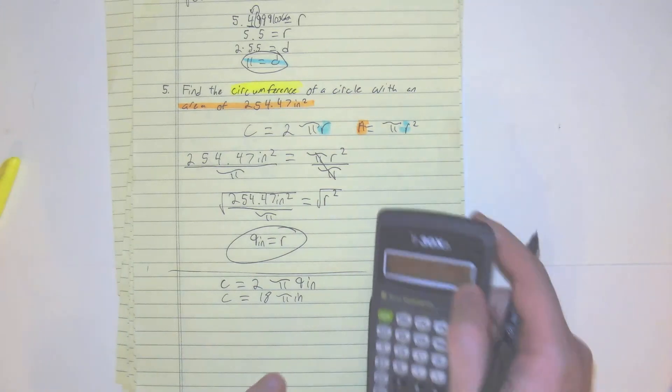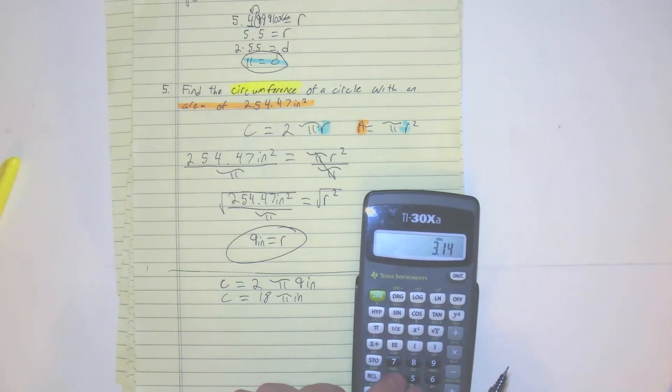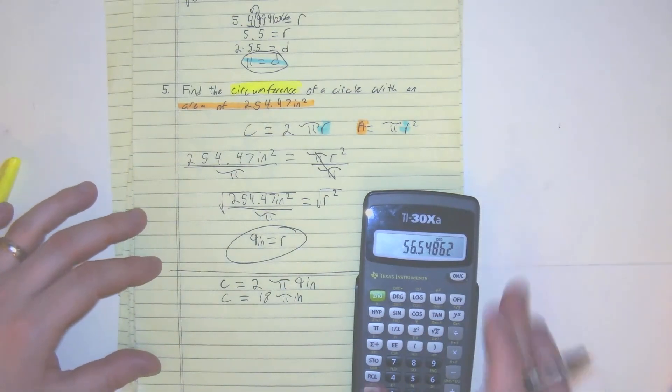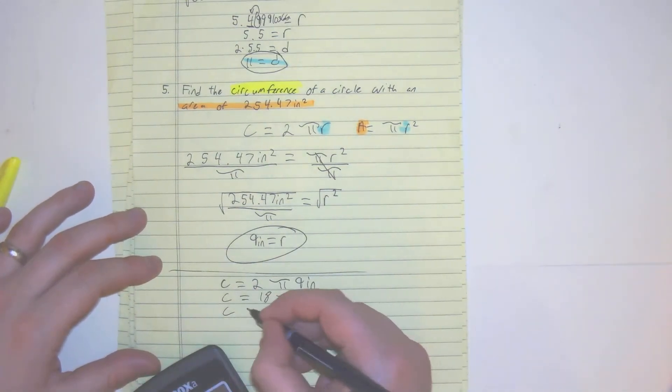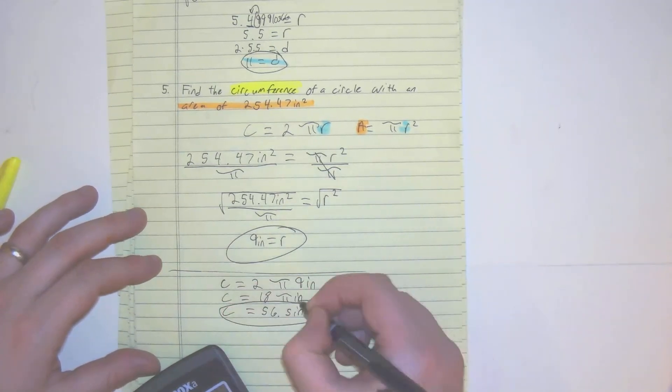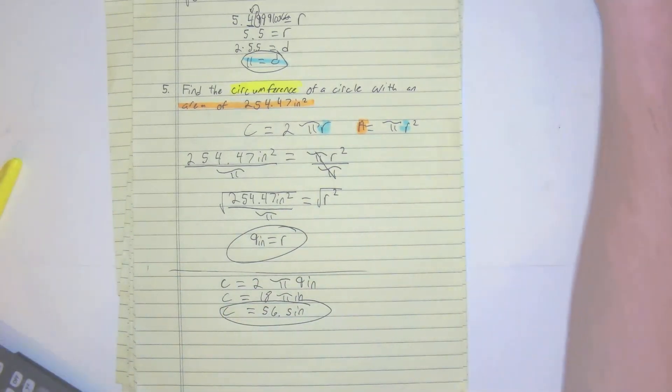And then we just multiply 18 times 3.14159. And we get 56.5. We're just going to keep it as that. So our circumference is 56.5 inches. Alright, and that's how you do it.